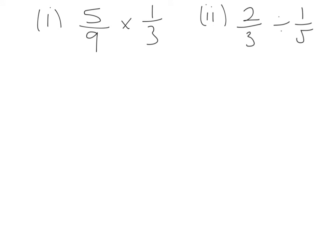Final thing I'm going to show you is how to multiply and divide fractions. To multiply fractions, it's really simple. You just do the top multiplied by the top and the bottom multiplied by the bottom, so it's going to be 5 multiplied by 1, which gives me 5, and 9 multiplied by 3, which gives me 27.